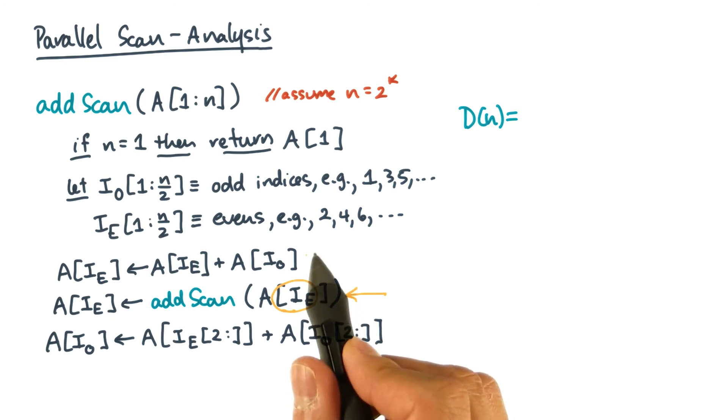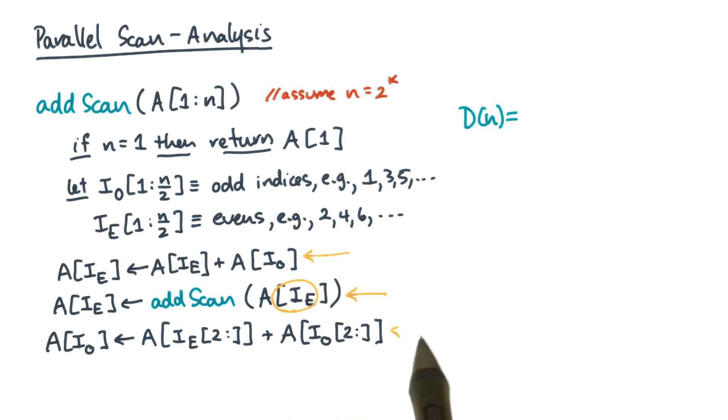All the other operations are data parallel. That means you can implement them using parallel fours, which will also have logarithmic span.